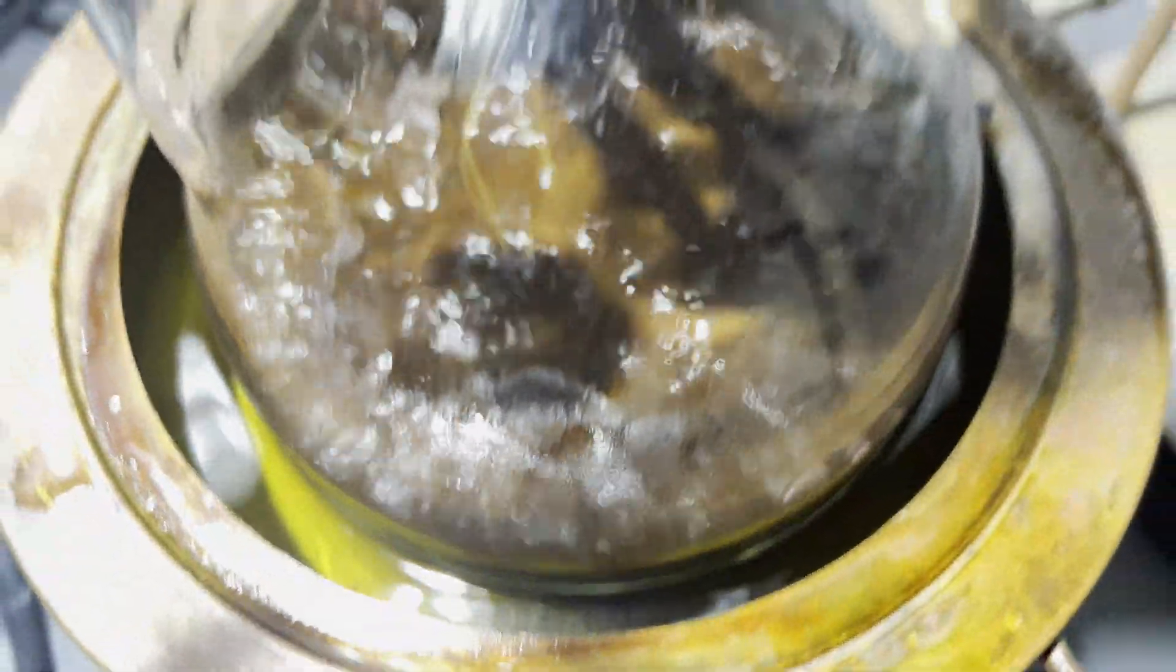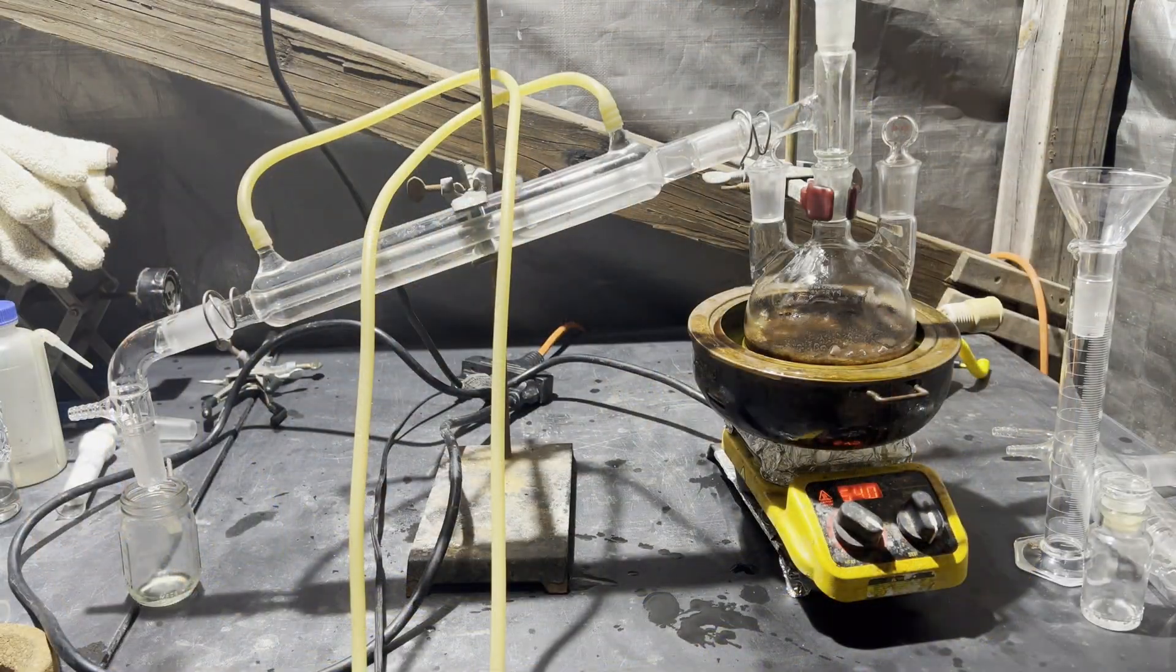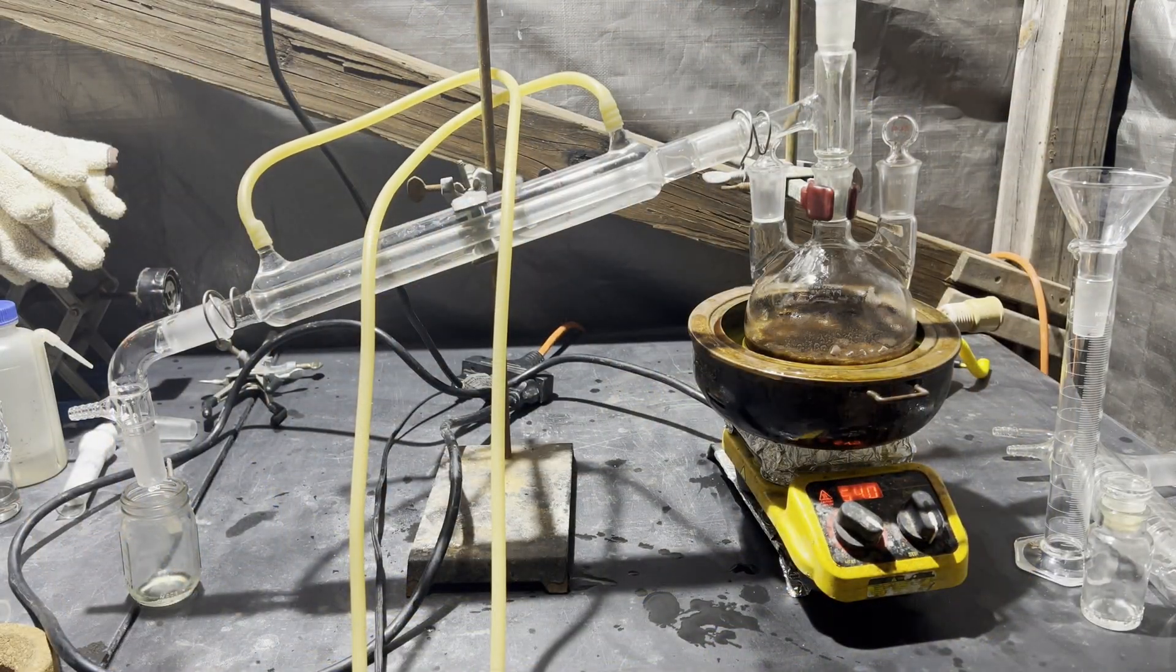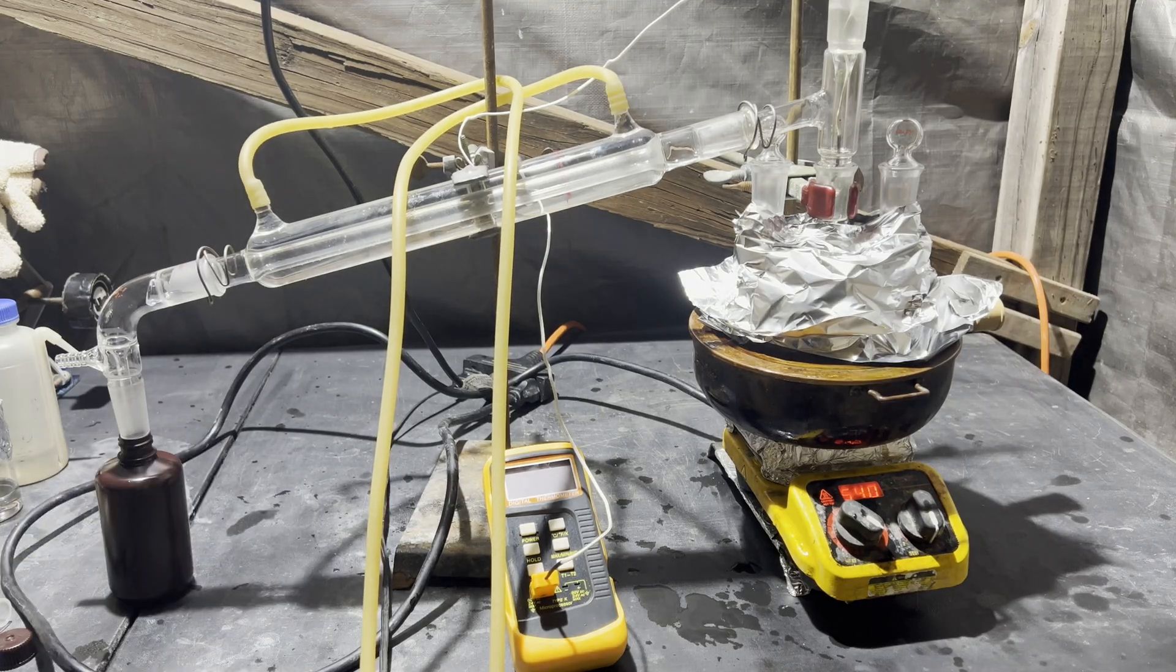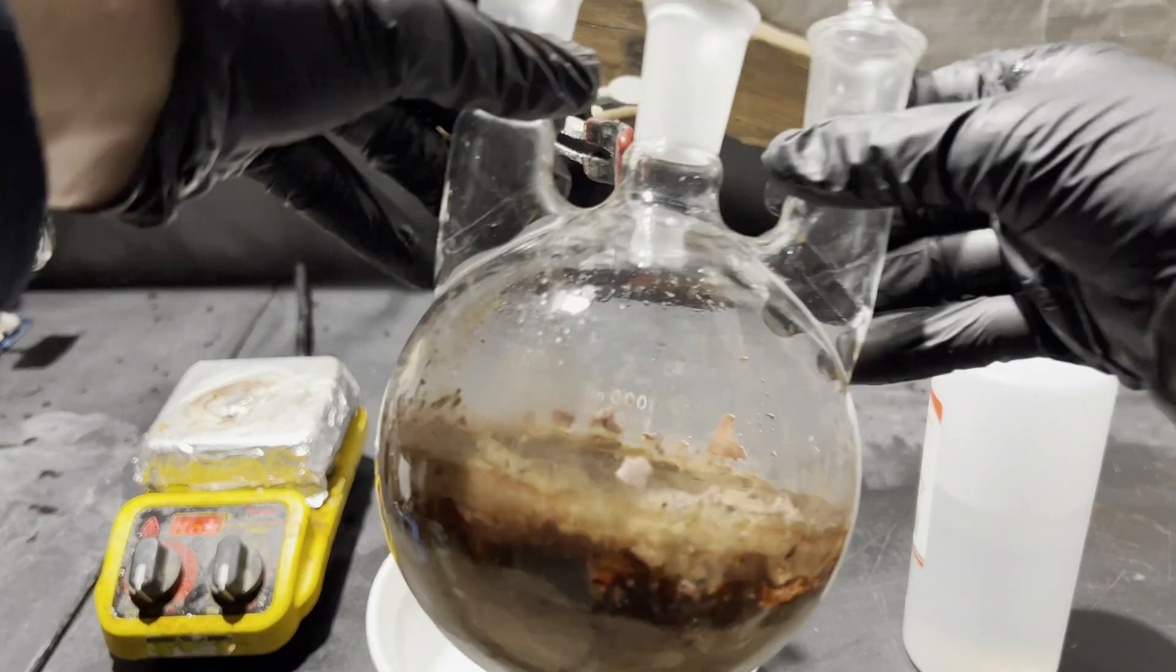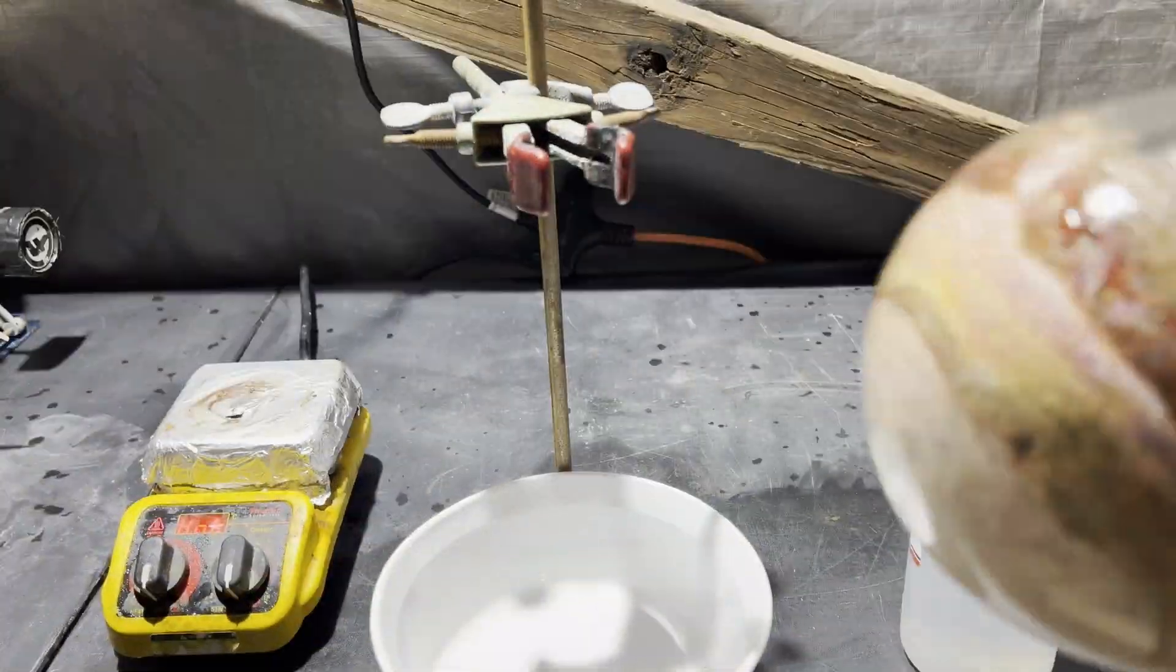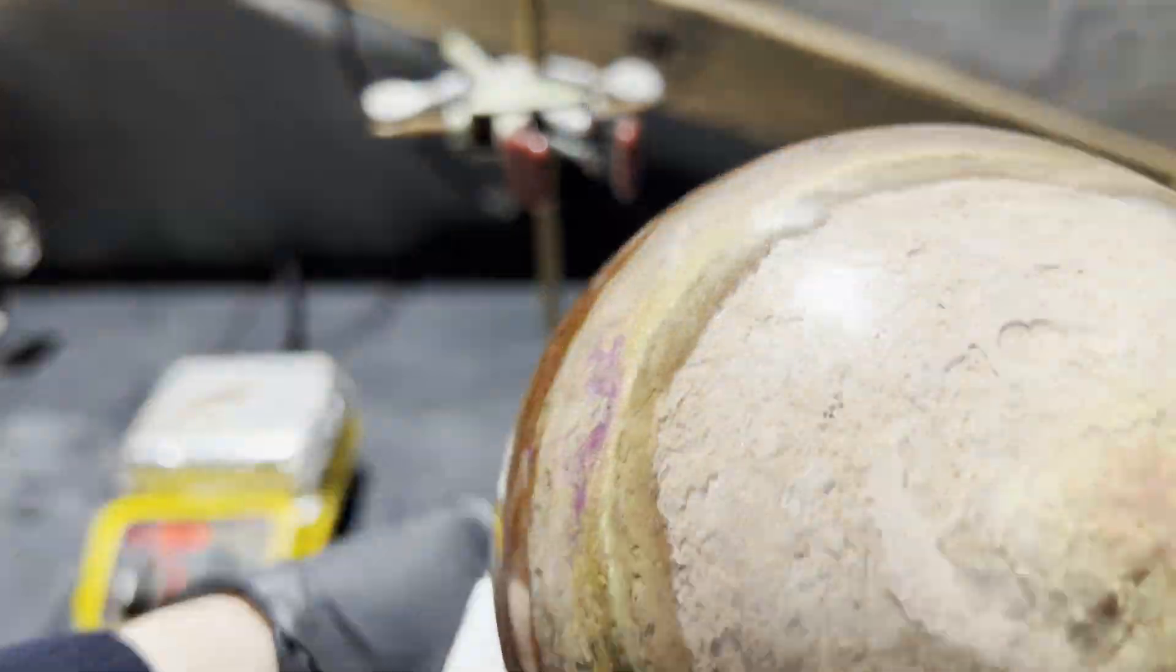Once the 24 hours was up, I swapped the reflux condenser to a simple distillation apparatus and distilled off as much ethanol as would come over. Using a heating mantle for this step would overheat the residue and char it as more ethanol is distilled. Hence the oil bath. The residue looks kinda like Jupiter, which I think is pretty cool.